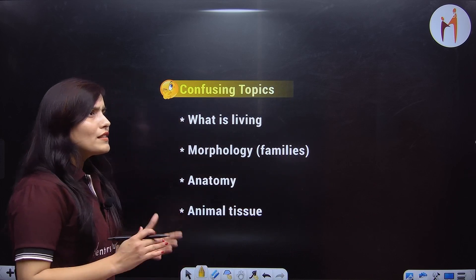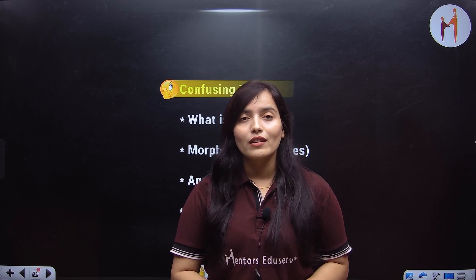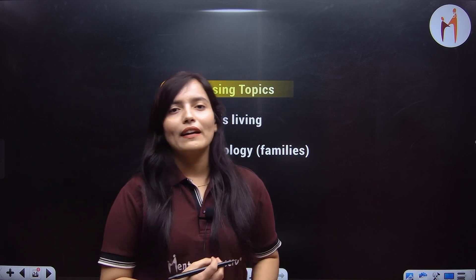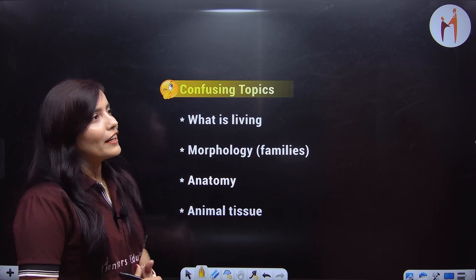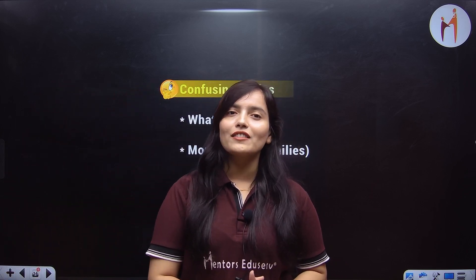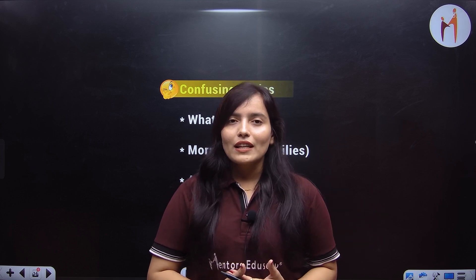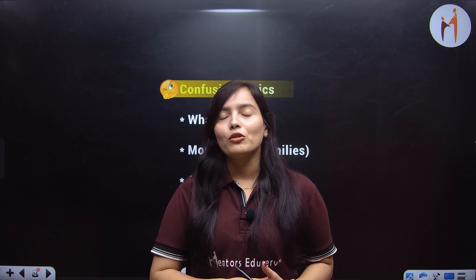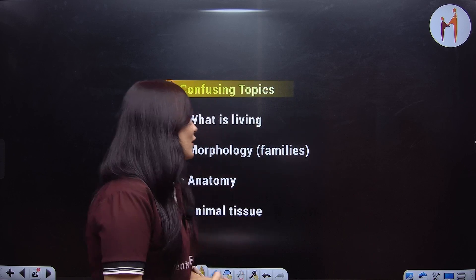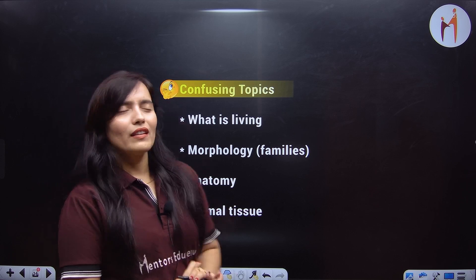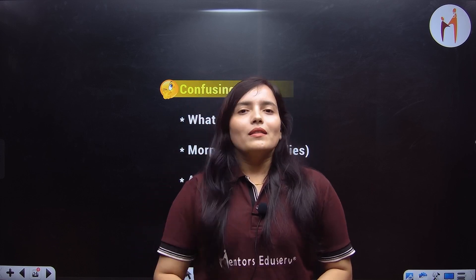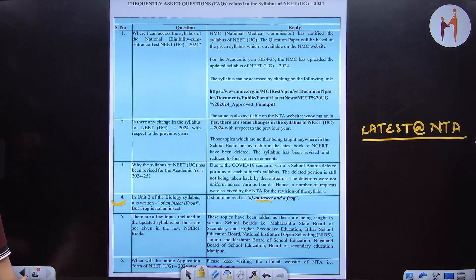But the confusion comes from certain topics. If families are added in morphology, you will have to read them. Also, some topics deleted from within chapters — like taxonomical aids from the living world — you can learn a little bit, as there are still some topics in living world you will have to read. Animal tissue is a topic not in your new NCERT, but it is mentioned in the latest syllabus, so you must read animal tissue at least once — because if it is clear, it will help you understand human physiology. In anatomy, secondary growth is deleted, but you should still read those chapters at least once and clear them. The rest follows the NTA syllabus.